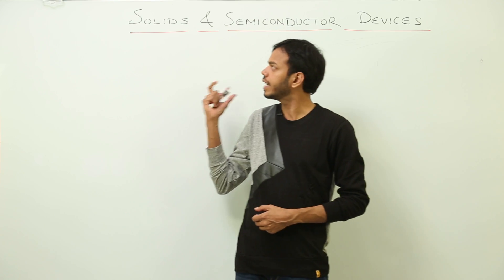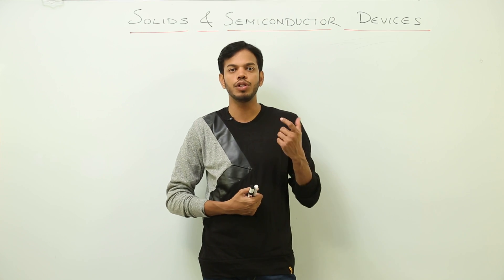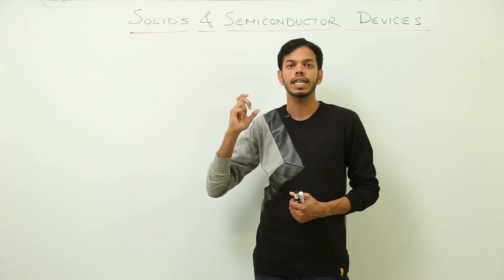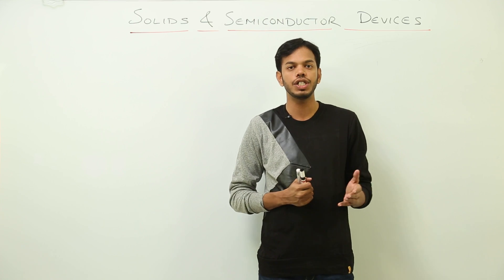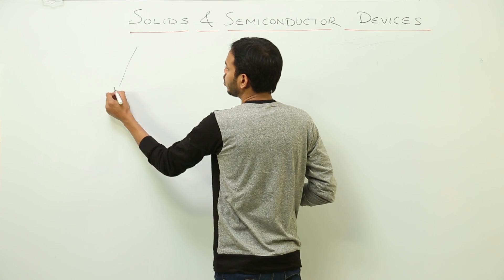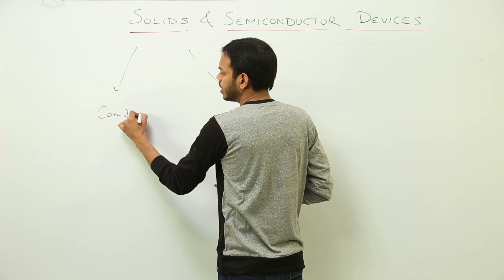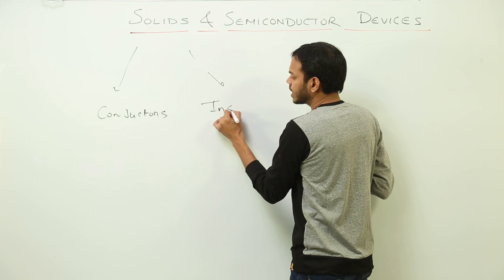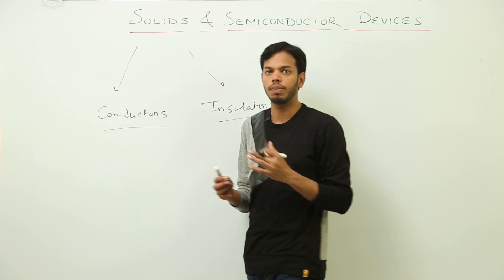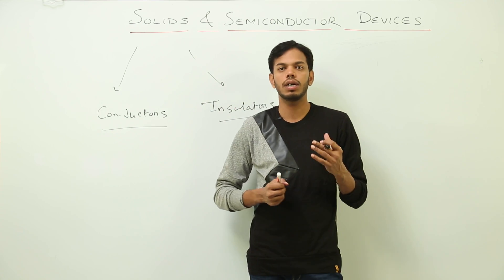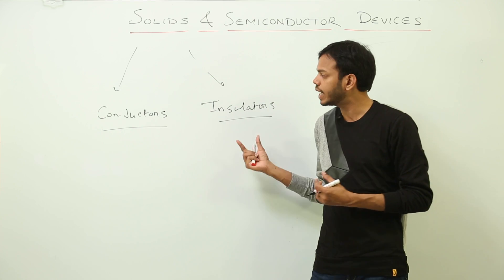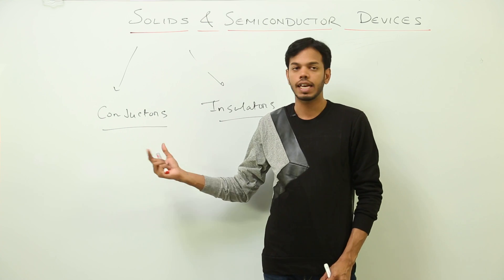Let's start studying about the new unit: semiconductors. We mentioned that the second-last unit covers solids and semiconductors. We can broadly classify solids into two parts: conductors and insulators. What is the intrinsic property that separates them? Conductors conduct electricity and insulators do not — but why?